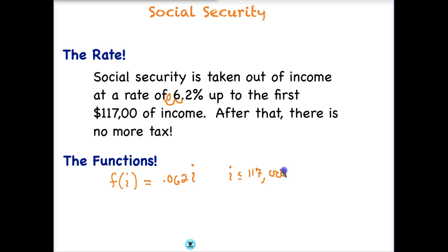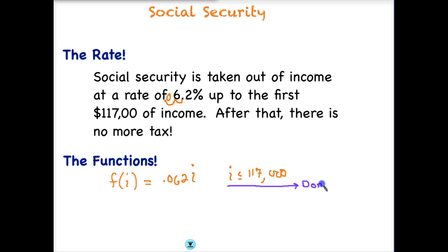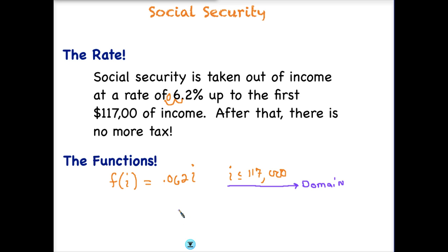So if you think about a piecewise function, this means we're going to write it in pieces. This is the first piece. This part here represents the domain — that is the interval on which this function will be applied. We will only use this function if our income is less than or equal to $117,000. If we have $120,000, we wouldn't use this equation. We're going to need another equation for income above that threshold.